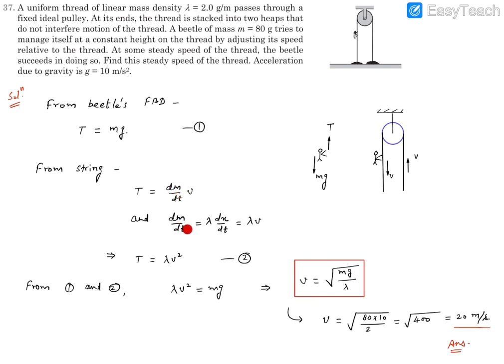Now what is this dm/dt going to be? It's going to be lambda into dx/dt. dx/dt is the velocity, so lambda into v is the dm/dt. So we can think the tension must be equal to lambda into v squared, because dm/dt is lambda v into v, that's lambda into v squared. Now these two tensions must be the same in order to ensure this static equilibrium of this beetle.